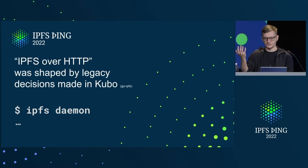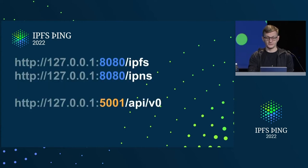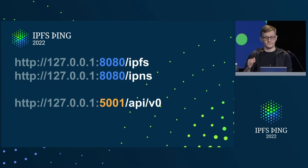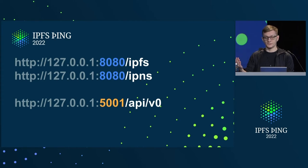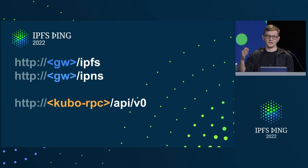It's now called Kubo. The way it worked: you had the daemon, you started the daemon, it was an IPFS node, and it opened two ports. On one port it had IPFS and IPNS namespaces, and on another port it had API v0. So one port was the gateway, and the second port was the RPC specific to this implementation of IPFS, to this specific daemon.